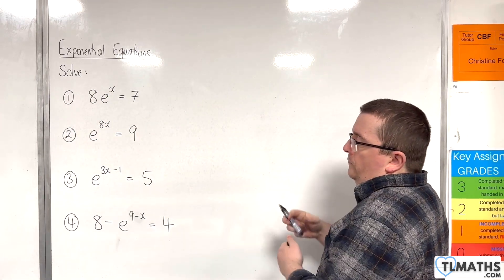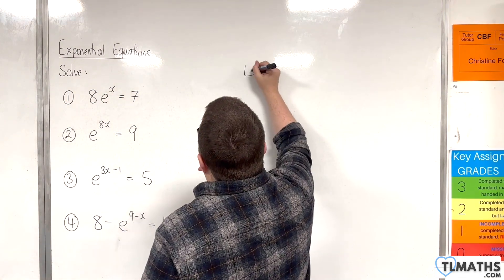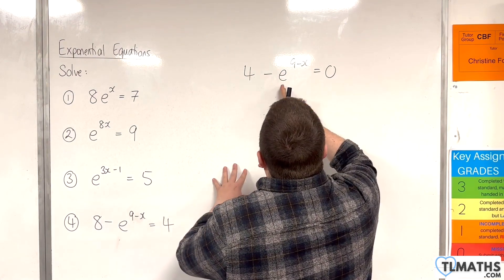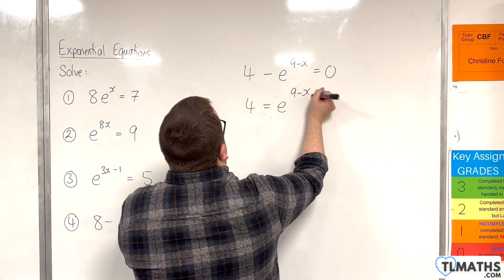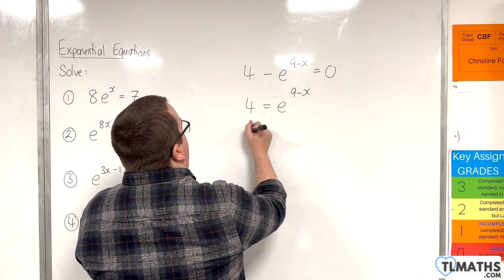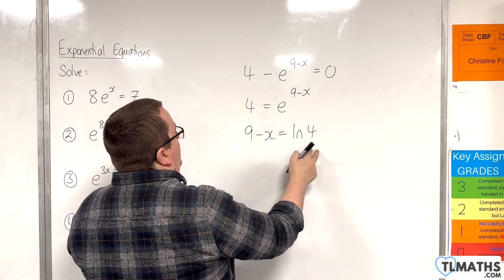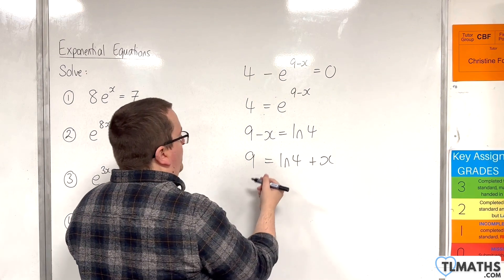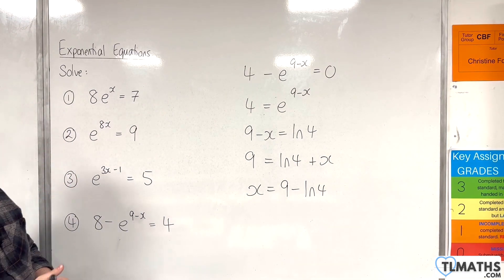The last one, number four. What I'm going to do first is subtract 4 from both sides, so 4 - e^(9-x) = 0. Now add e^(9-x) to both sides, so 4 = e^(9-x). Now we can go from exponential form to logarithmic form. So 9 - x will be the natural log of 4. Add x to both sides, then subtract ln 4 from both sides. So x would be 9 - ln 4.